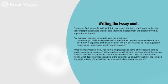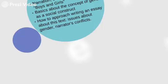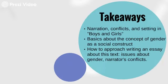What words or phrases do you notice? What do they show? What do we learn about the narrator — how she sees herself, how she sees the world around her? And to what end? In other words, what does your close reading of that quote tell us about the world of the text — her world, her family, the setting — and the world outside the text, meaning our world now, the sociopolitical context in which the story exists? As you think about writing about the story, consider the narration, conflicts, and setting, those basic concepts of gender as a social construct, and ask those questions as you approach writing about this text with regard to gender.